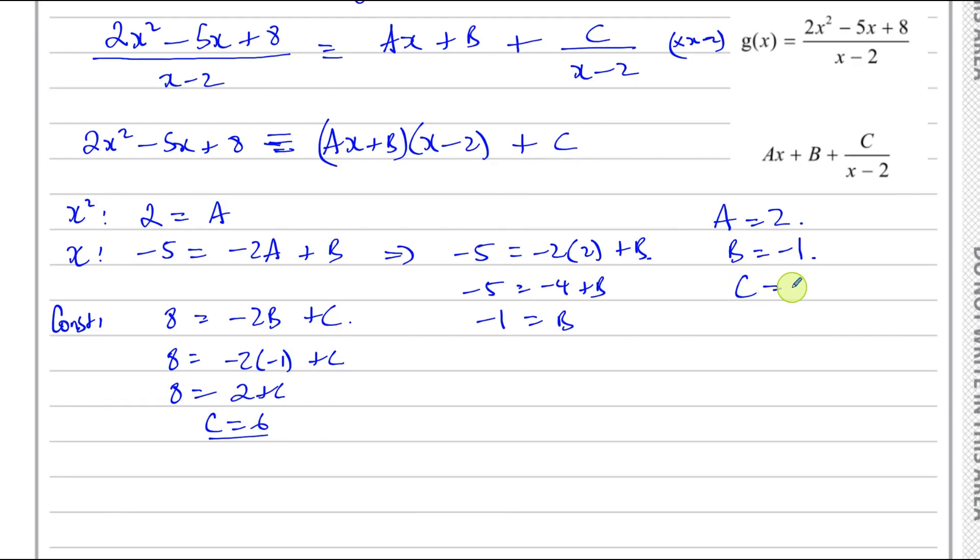So we have the values of A, B and C. So we can say g(x) therefore is equal to 2x minus 1 plus 6 over x minus 2. That's another way of doing the question.